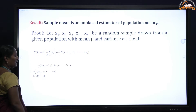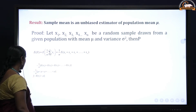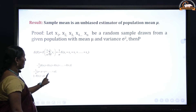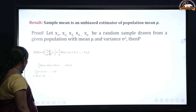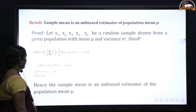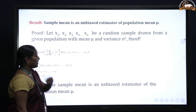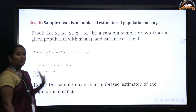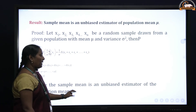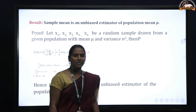Substituting mu in place of each E(xi), the sum becomes n*mu, and after canceling n, we get x bar = mu. Therefore, the sample mean is an unbiased estimator of the population mean.